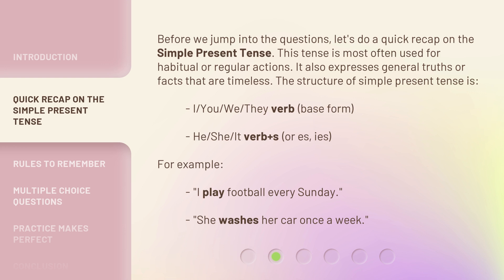The structure of the simple present tense is: I, you, we, they + verb base form; He, she, it + verb plus s or es. For example: I play football every Sunday. She washes her car once a week.